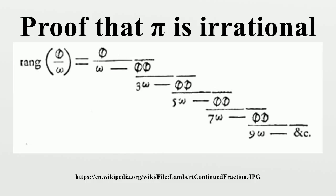Hermite's proof: This proof uses the characterization of pi as the smallest positive number whose half is a zero of the cosine function and it actually proves that π/2 is irrational. As in many proofs of irrationality, the argument proceeds by reductio ad absurdum.